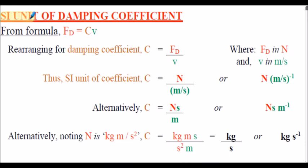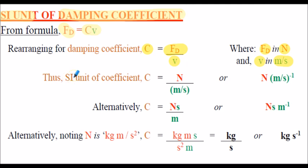Let's consider the SI unit of damping coefficient. As always, when using the SI system, the unit is derived from the formula. Noting that Fd equals C multiplied by V, we transpose to get C equals Fd divided by V. We know that force Fd is in newtons and velocity is in meters per second, so the SI unit of coefficient C is the newton per meter per second, also written as newton multiplied by meters per second to the negative one.